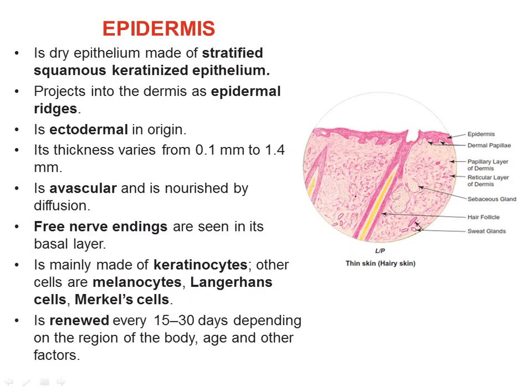The epidermis is made up of stratified squamous keratinized epithelium and projects into the dermis as epidermal ridges. The light area is dermis and the dark pink area is epidermis. This epidermis is ectodermal in origin; its thickness varies from 0.1 to 1.4 mm. The epidermis is avascular, and its nourishment is done by diffusion.